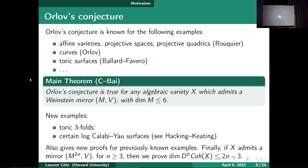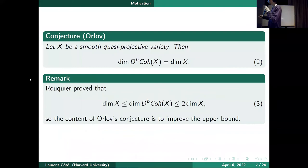In the case where X admits a mirror of dimension greater than 6, we don't prove Orlov's conjecture, but we do improve the upper bound on dimension a little bit.